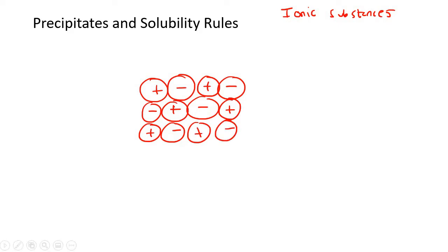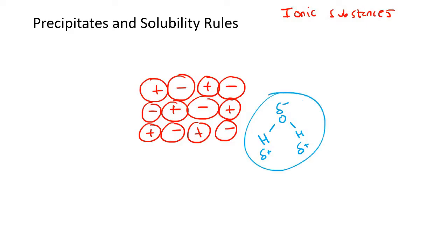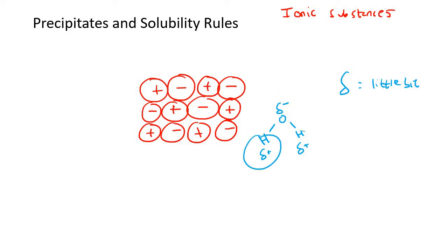Water plays a huge role in this chapter. We learned in a previous lesson that water has a slightly positive charge at the hydrogen areas and a slightly negative charge at the oxygen. This little symbol just means 'a little bit' — so this is a little bit negative, and these are a little bit positive.